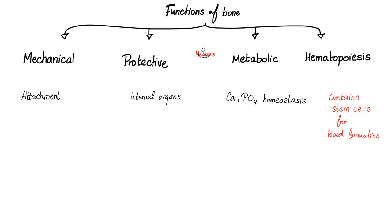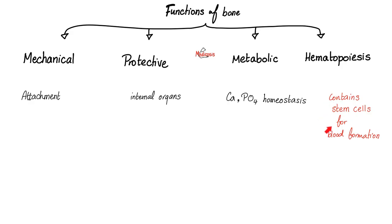Why do we need bones? Many functions. Mechanical support and attachment for muscles. Protective function to protect the internal organs — for example, the skull protects the brain. Metabolic functions: bones have matrix and minerals including calcium and phosphorus. If your blood is lacking calcium and phosphorus, the bone will break itself a little to release some into the blood. Moreover, within your bone there is a core called the bone marrow, which is important for hematopoiesis — the formation of blood cells. Your red blood cells, white blood cells, and platelets come from the bone marrow.